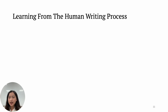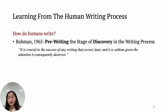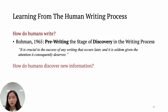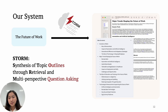When trying to solve this challenging task, we actually learned a lot from the human writing process. So how do humans write? Last century, when studying how to teach human writing, Rohemann brought up the concept of pre-writing. He views the pre-writing stage as a stage of discovery in the writing process and emphasizes its importance before the actual writing gets started. Human learning theories also highlight asking effective questions in research and information acquisition. Building on these concepts, we design STORM, which focuses on the pre-writing stage by synthesizing topic outlines through retrieval and multi-perspective question asking.